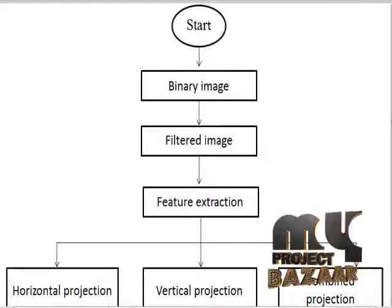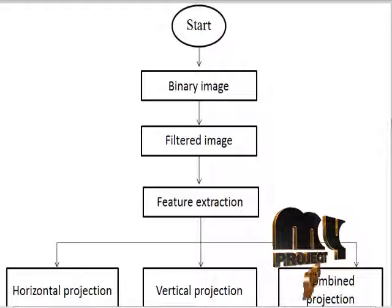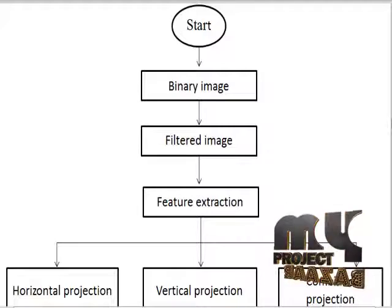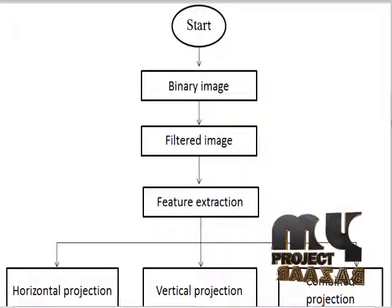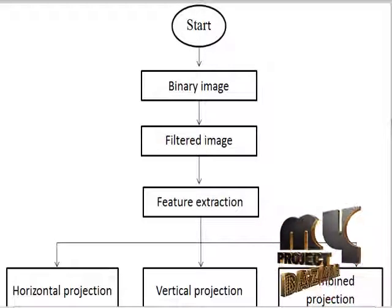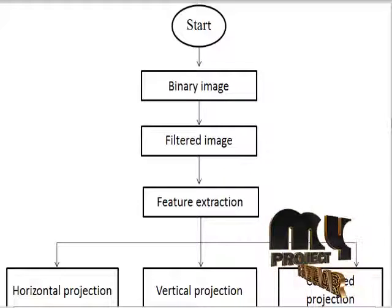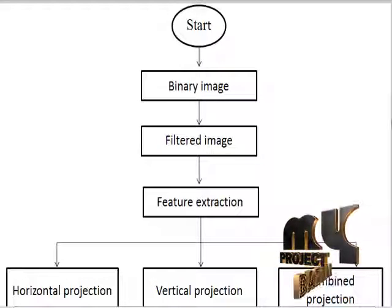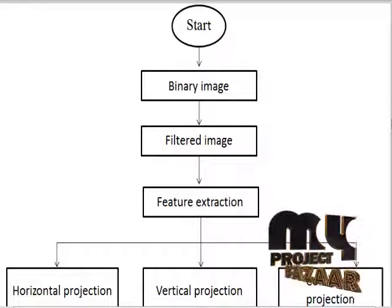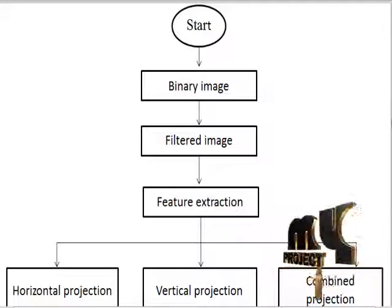This is the flow diagram for static handwritten signature identification using Discrete Radon Transform. In the binary image stage, after thresholding, the input image is converted into binary format, so the input signature image will be in black and white. The inversion process is then applied to the binary image, which changes the signature. Then the image is cropped by an automatic cropping system. In the filtered image stage, median filter is used for filtering the signature image. Median filter is an effective method because it is a simple smoothing filter.